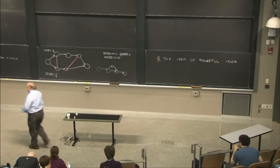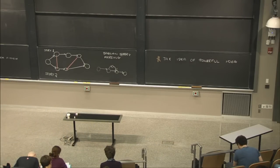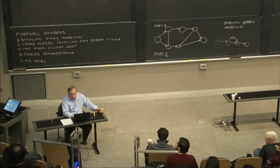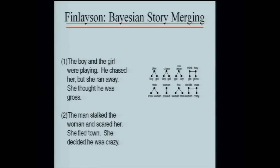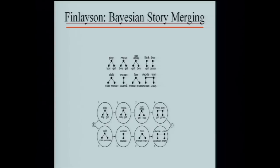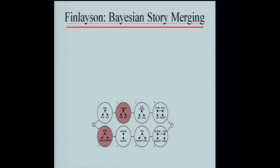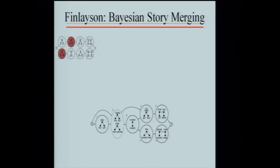I'd like to show you a more convincing demonstration. So there are the two stories — just a classroom demonstration. You can see there's a sort of parallel structure. This is the work of graduate student Mark Finlayson, who processed those stories to produce events assembled into two story graphs. The question is: is this the most probable way of explaining that corpus? And of course the answer is no. If you merge some things, like chase and stalk, you get a simpler graph — one that is more probable in the sense we discussed last time.